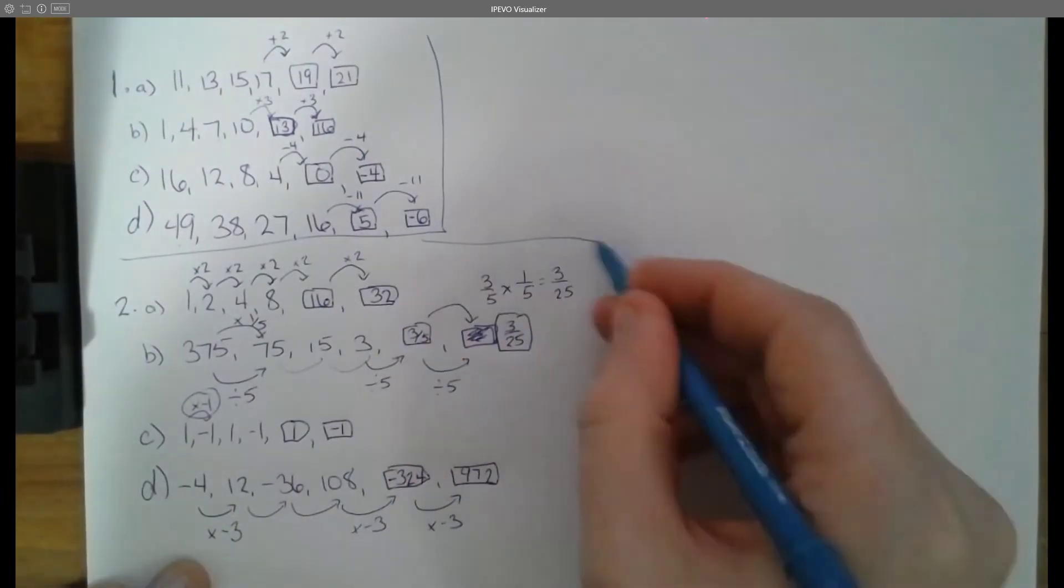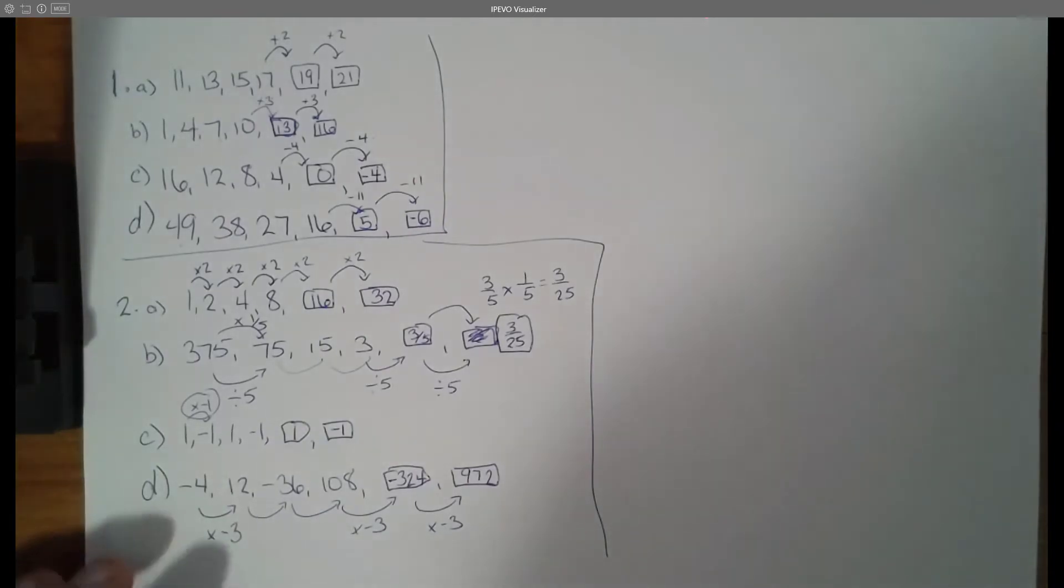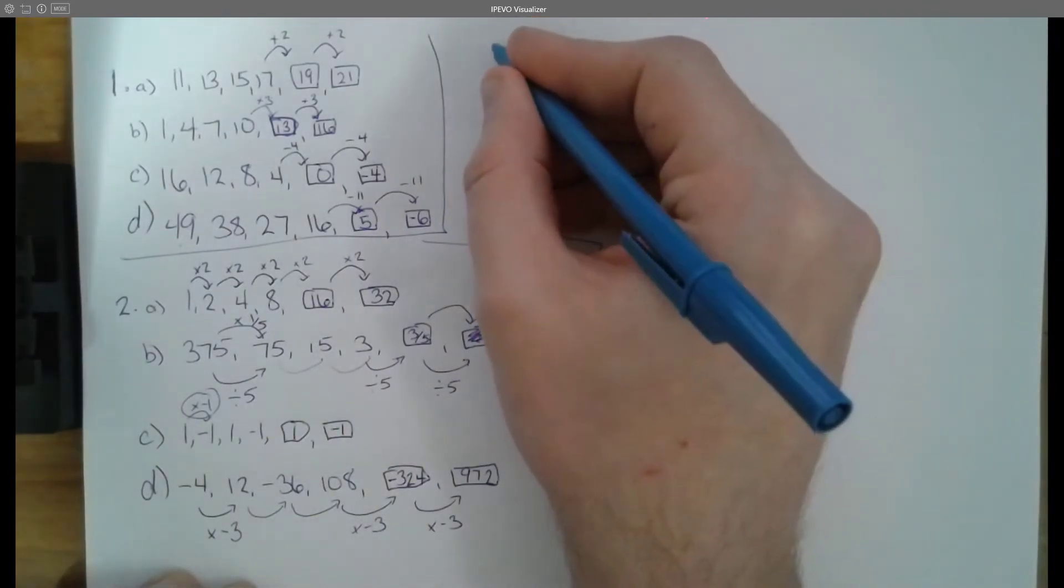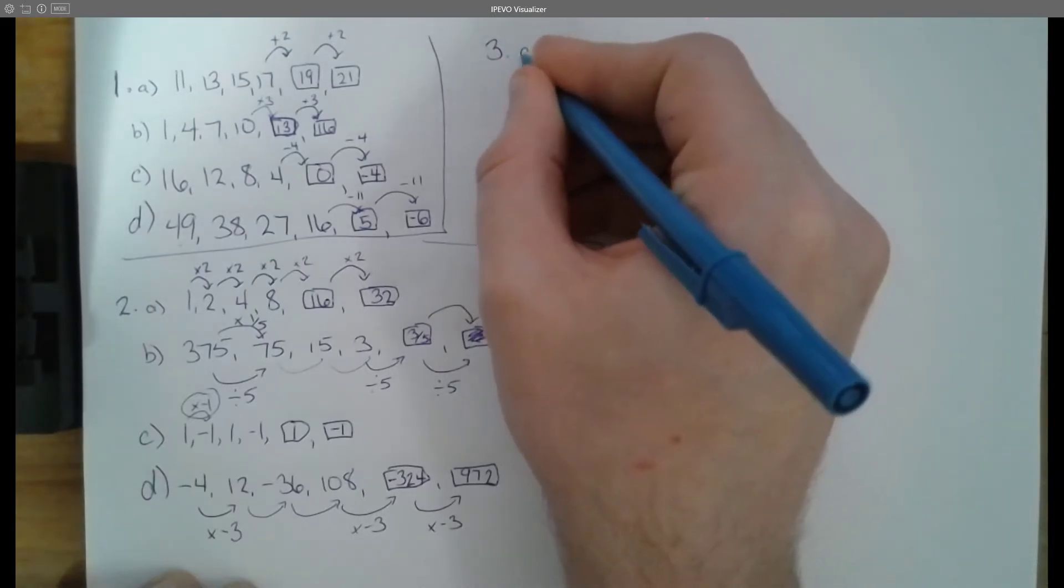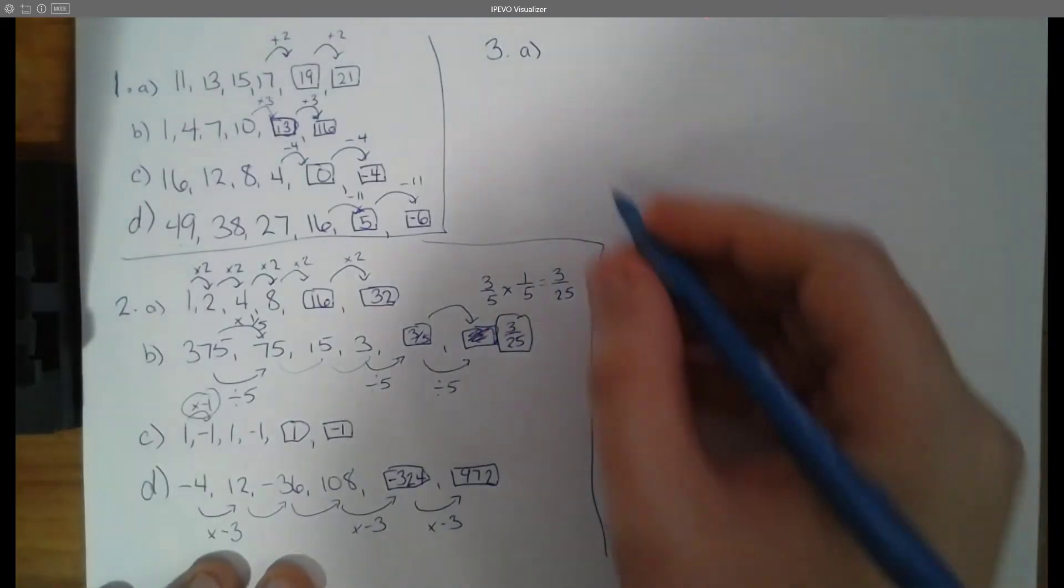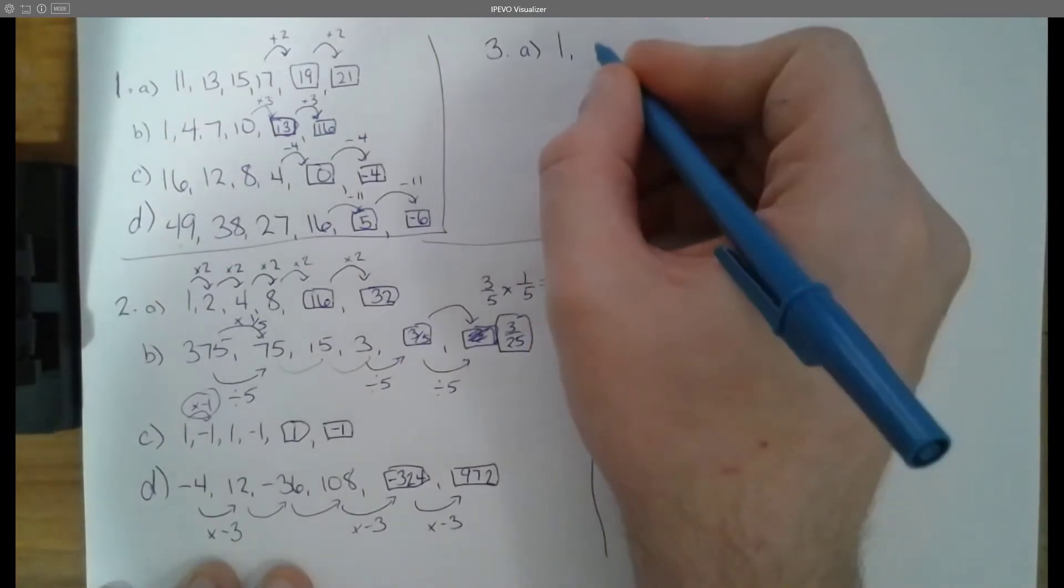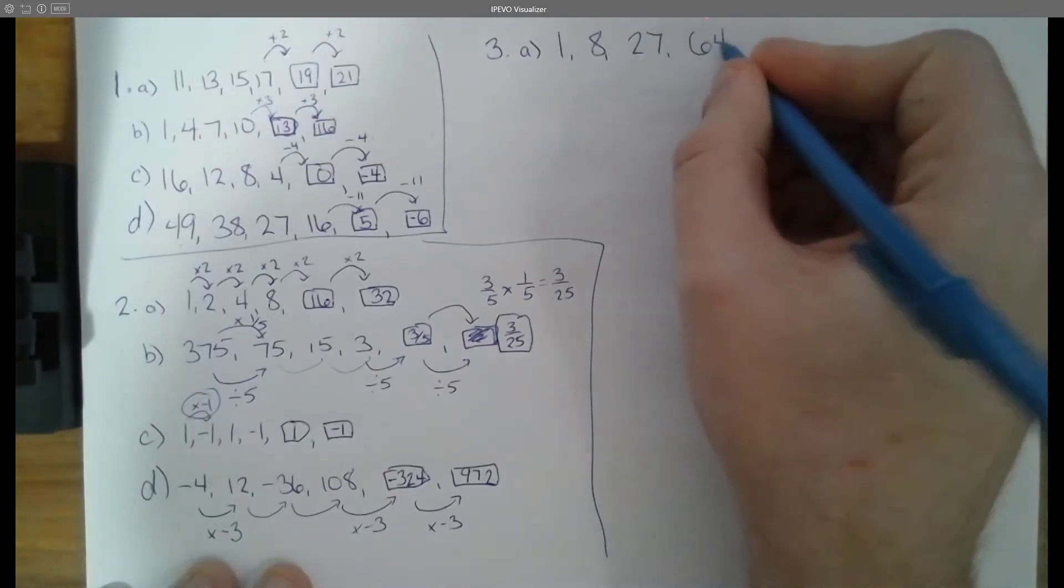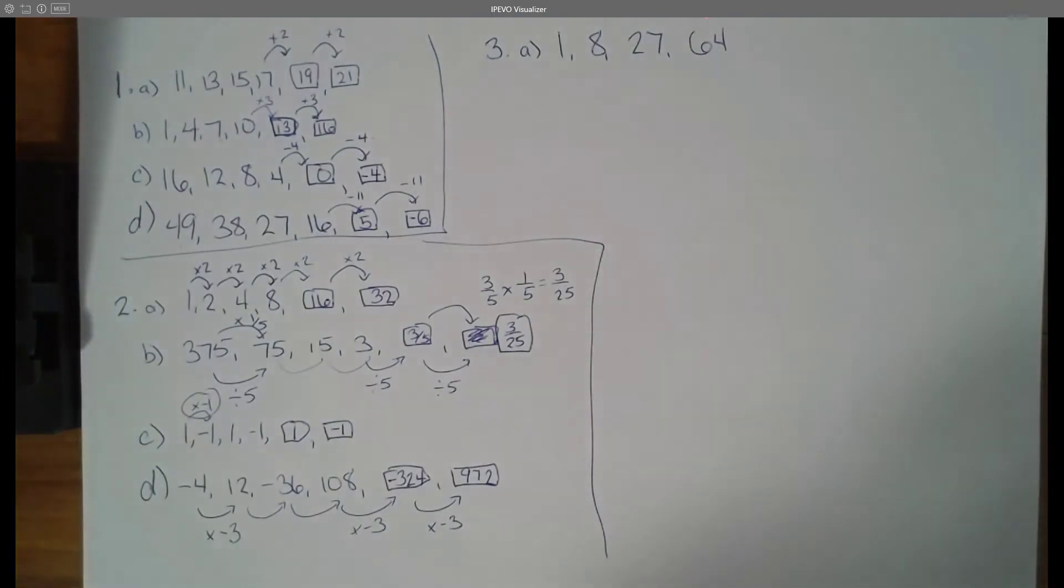So there's one. There's two. Now let's move on to three as we finish up our understanding on sequencing. 3a, we get 1, 8, 27, 64.